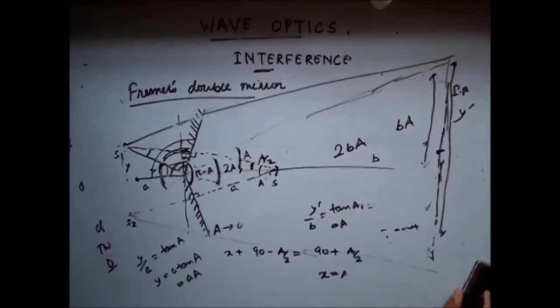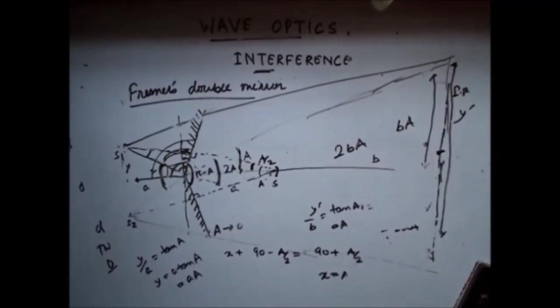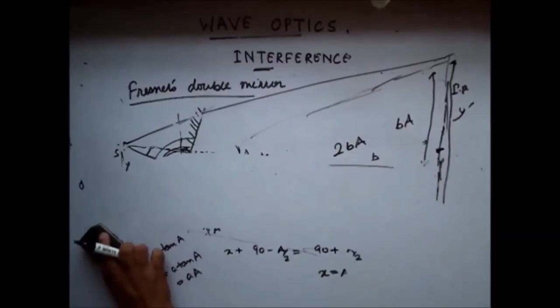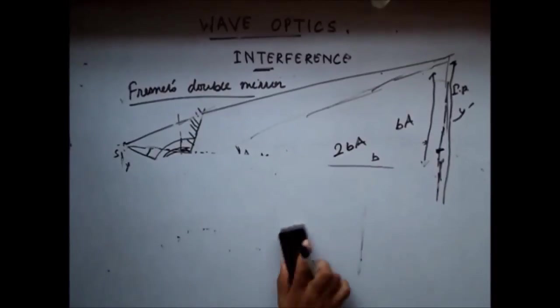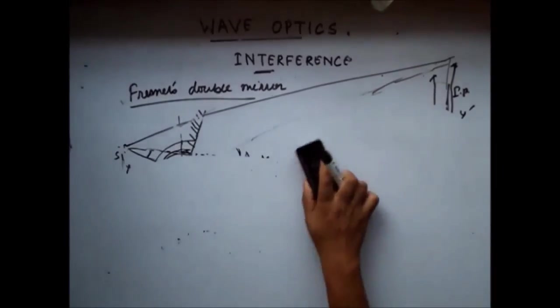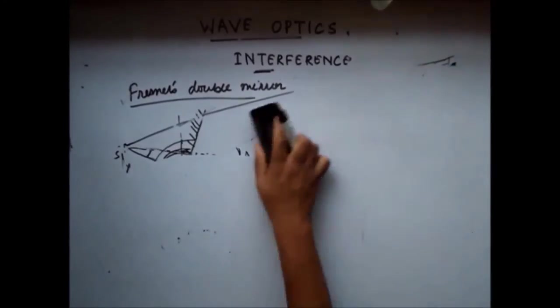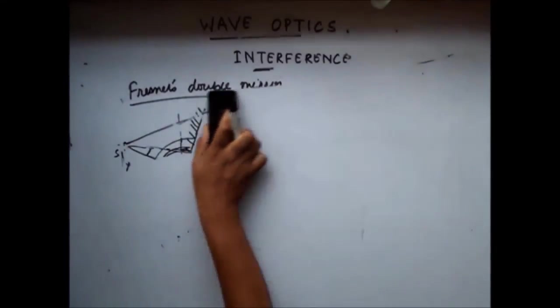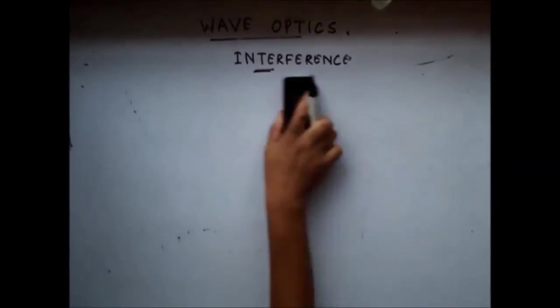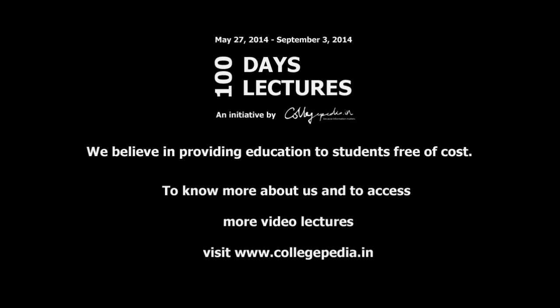Now let us take the case of Fresnel's bi-prism, where again we use a prism to get two coherent sources.